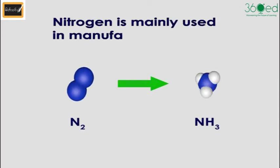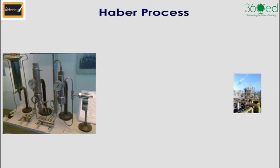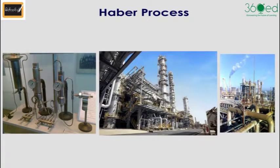The principal use of nitrogen is in the manufacture of ammonia. Ammonia is obtained on an industrial scale by the Haber Process.